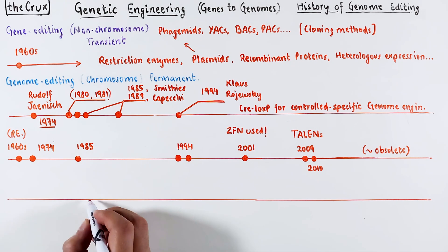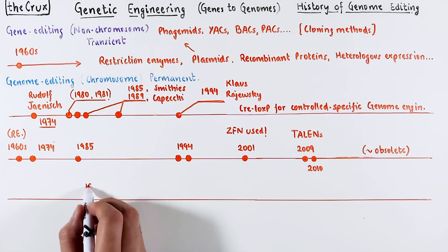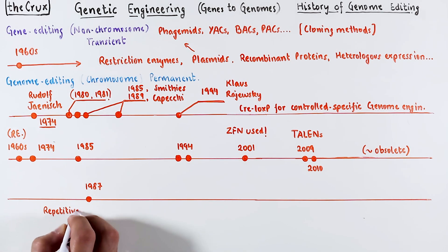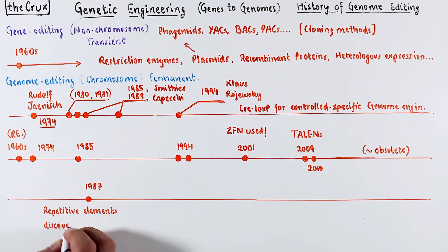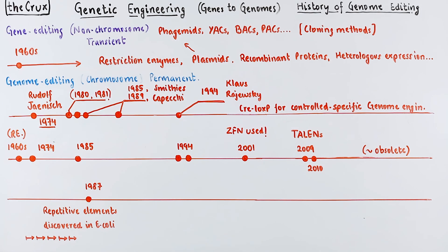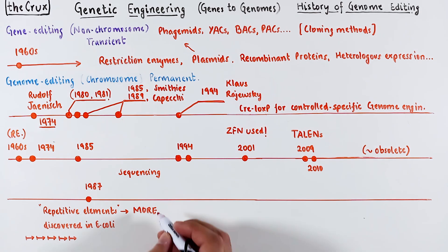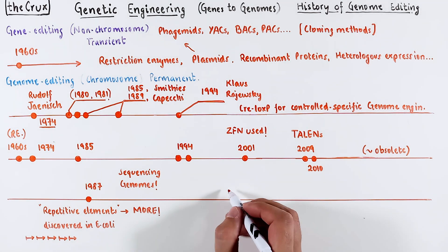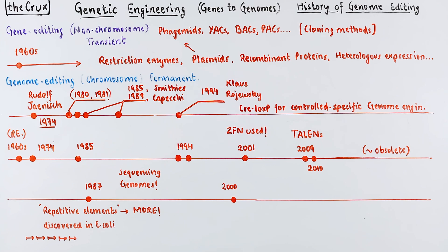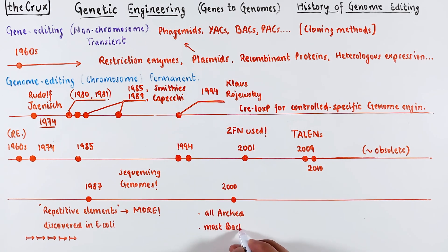A parallel timeline that starts in 1987 makes ZFNs and TALENs obsolete. This was the discovery of repetitive elements in the 3' end of a gene in a bacteria. After 1987, many more repeats of this kind were discovered. The rise of DNA in genome sequencing and PCR was a big help. And then 13 years later, someone assembled all this information on repetitive elements and found that nearly all archaeobacteria and most eubacteria have these repeats in their genomes.